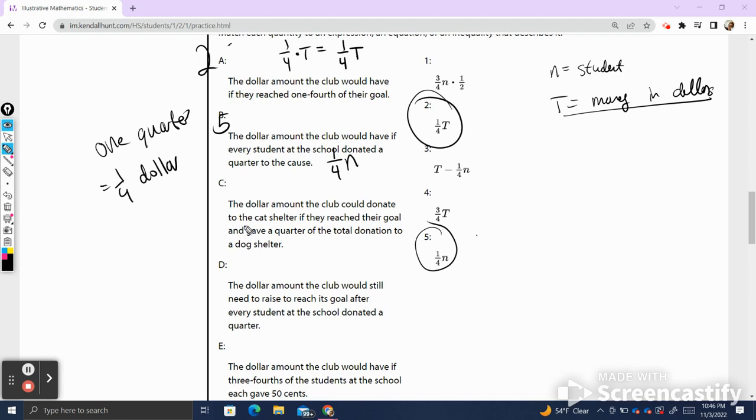C says the dollar amount the club could donate to the cat shelter if they reached their goal and gave a quarter of the donation to the dog's shelter. So if the club reached their goal, they would have T dollars. But if they gave away a quarter of the total donation, we're going to subtract one fourth of the total donation amount. We have to remember here that there's a hidden one in front of that T. If I say one T minus one fourth T, I'm going to get three quarters T. So the amount that would have left is three quarters of the original amount, which is the answer that we see in number four.